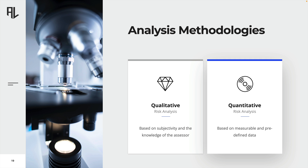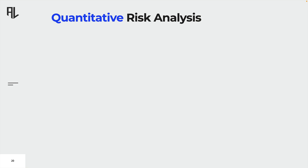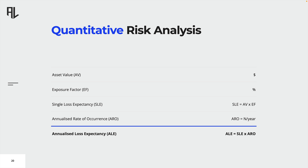Quantitative risk analysis is a more objective approach to analyzing risks. Organizations attempt to determine the actual costs and probabilities of risks. This methodology provides more specific information and allows for quantifiable decisions. However, the results should be considered as estimates rather than exact figures, although they can be very close to reality. The asset value represents the replacement value for the asset. The exposure factor is the financial loss resulting from the realization of a risk, expressed as a percentage. The single loss expectancy (SLE) is calculated by multiplying the asset value with the exposure factor, representing the financial loss per occurrence. The annualized rate of occurrence (ARO) describes the probability of the risk as the number of times per year. Finally, the annualized loss expectancy (ALE) is the SLE multiplied by the ARO.